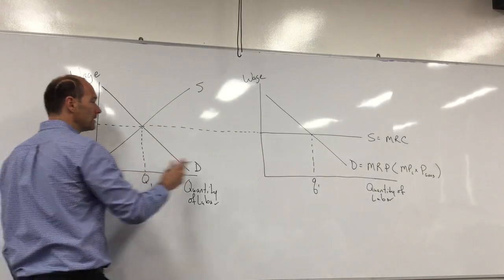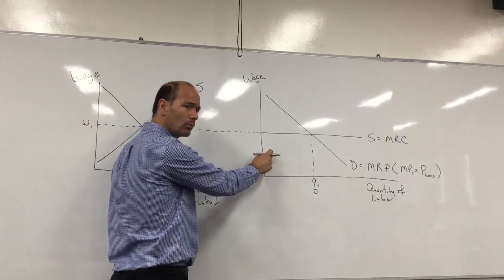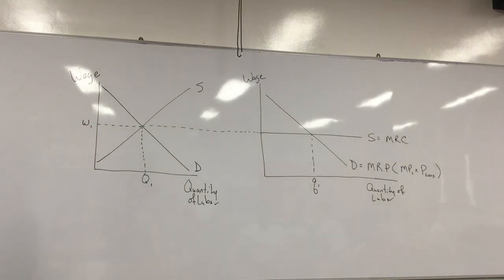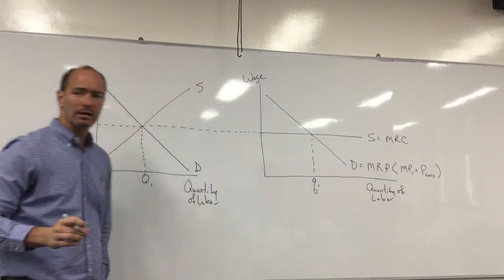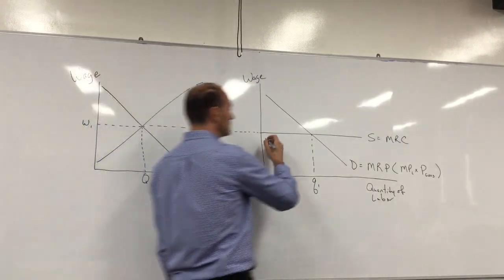So we would say businesses over here are wage takers. Like businesses in the perfectly competitive product market are price takers, businesses in the perfectly competitive labor market are wage takers.